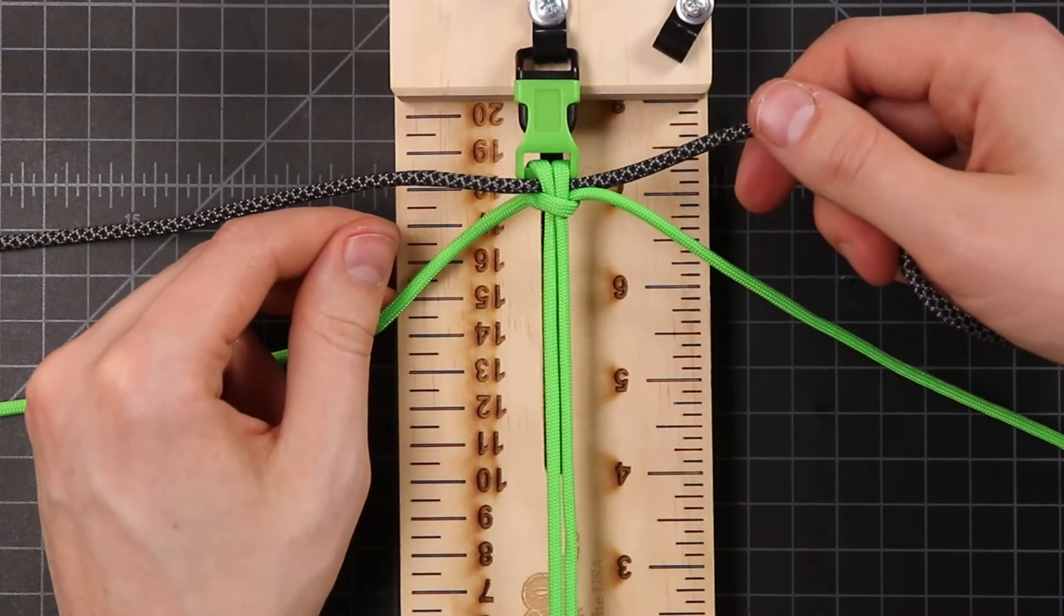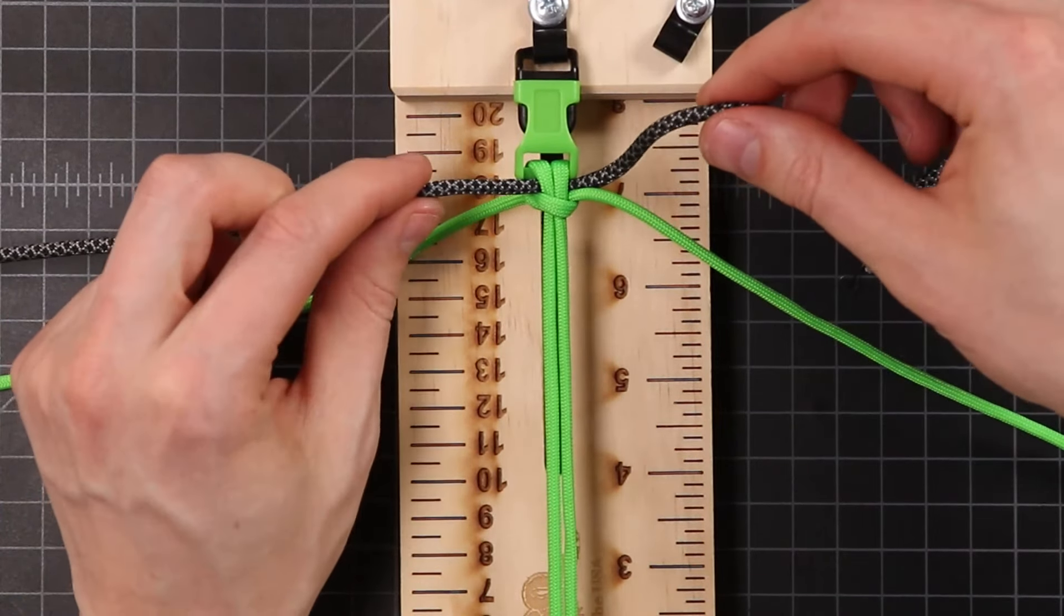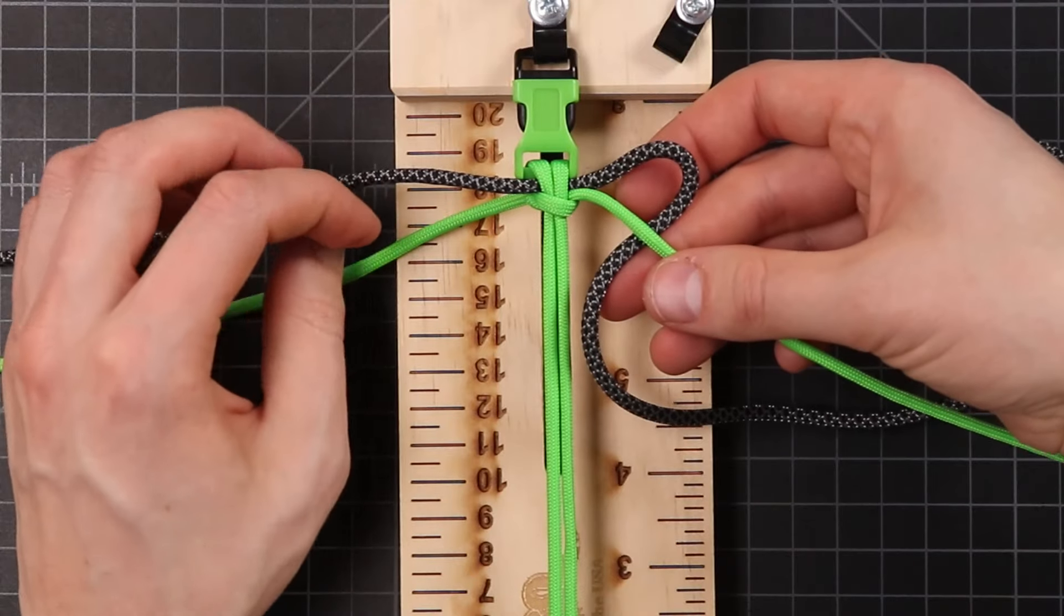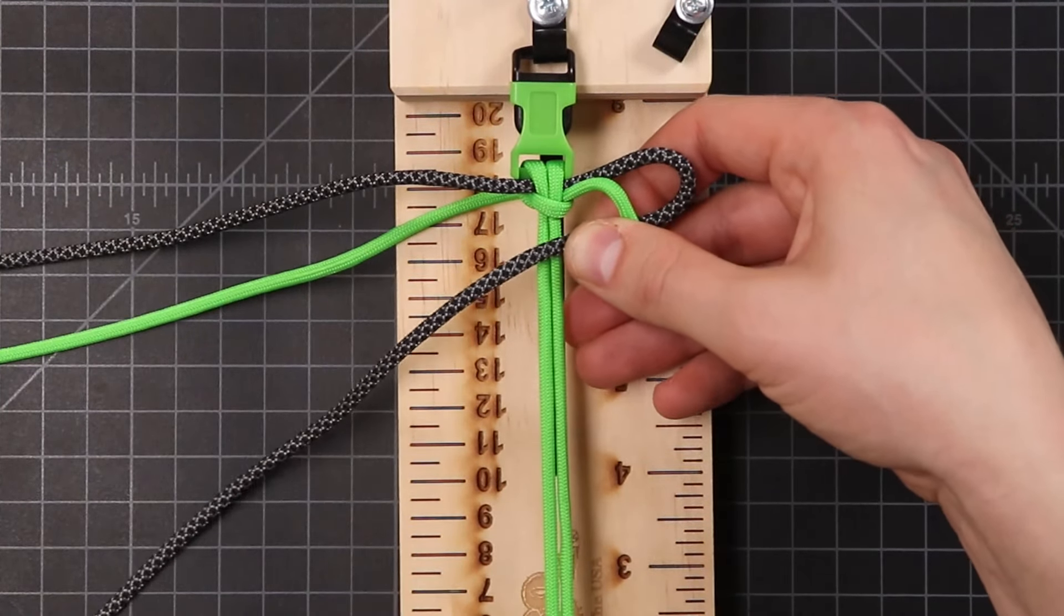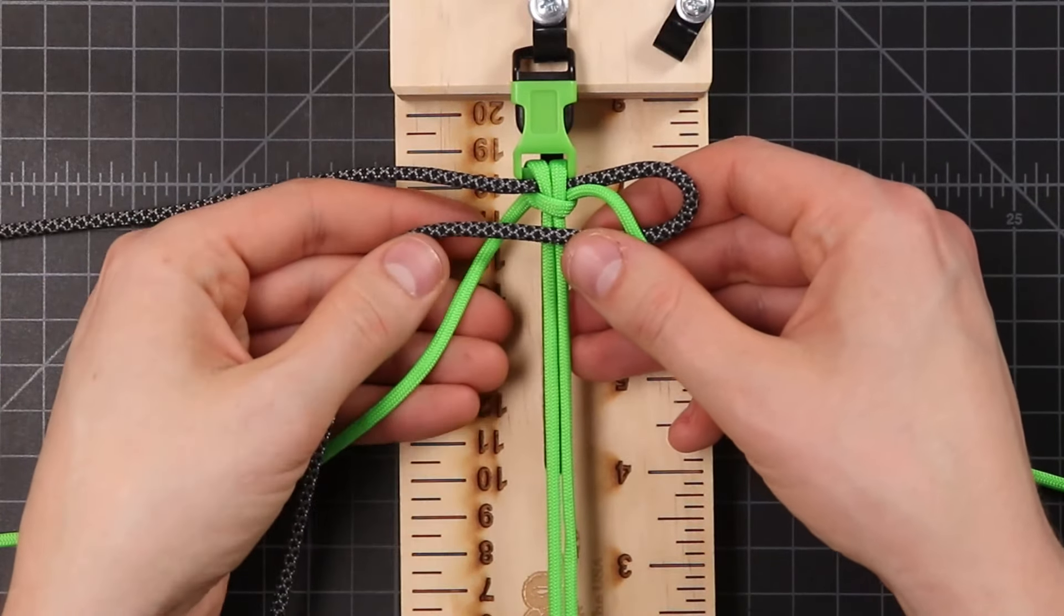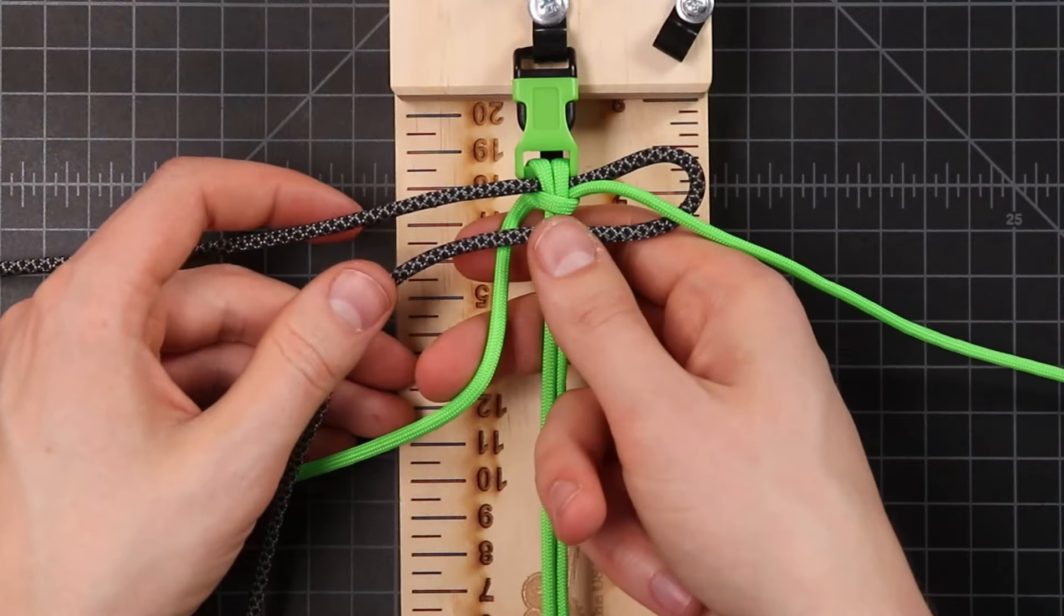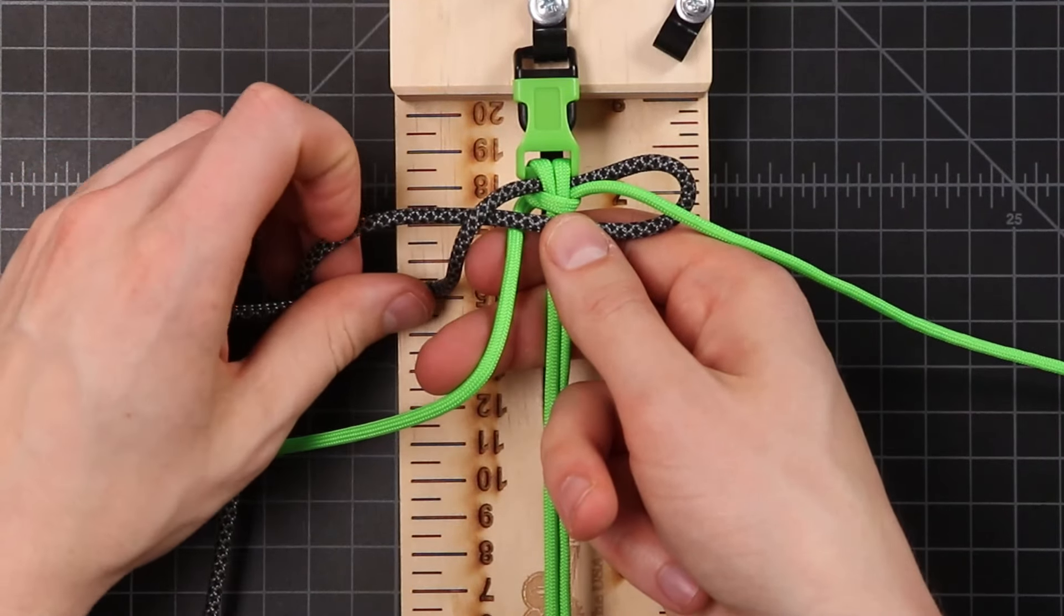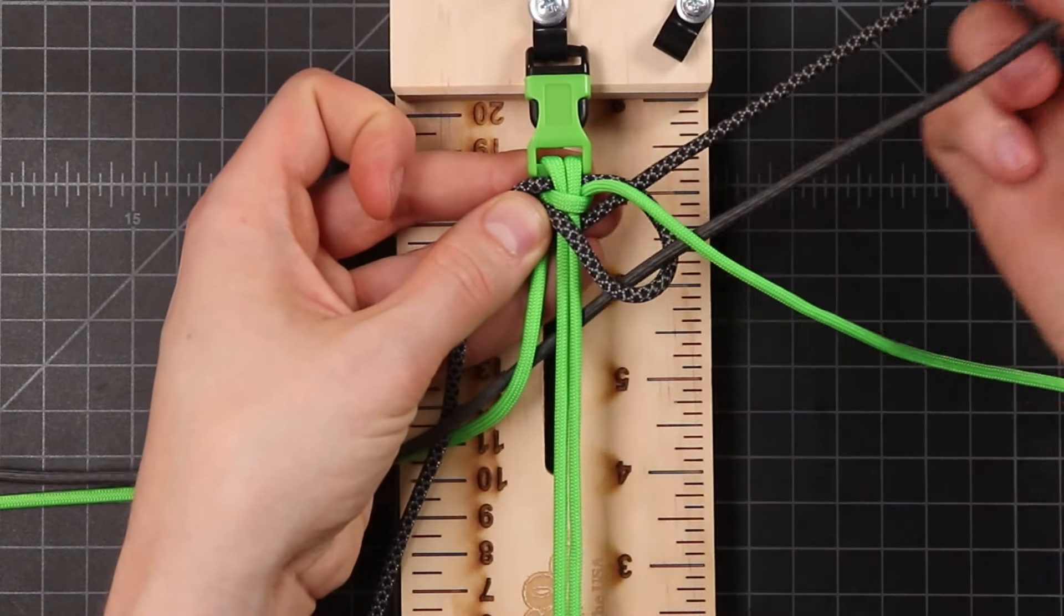Take that right side cord, and that's going to go over the top. But when you're going over the top with your secondary color, you want to go under that first strand. And then over the top of everything else. So right now we've got that. And then our cord that usually goes around the back is going to do the same thing as it always does. Go over that first cord, down and around the core, and up through that loop.